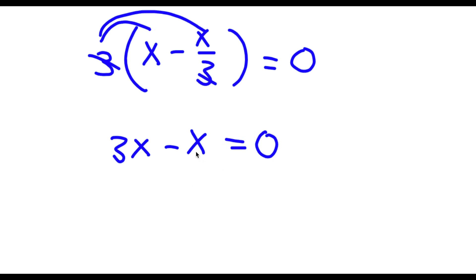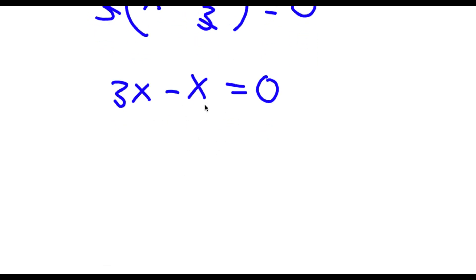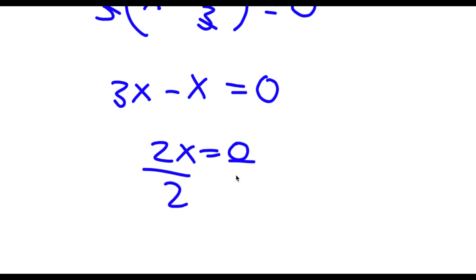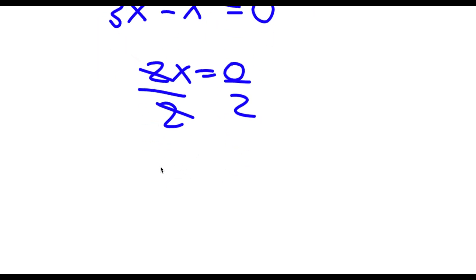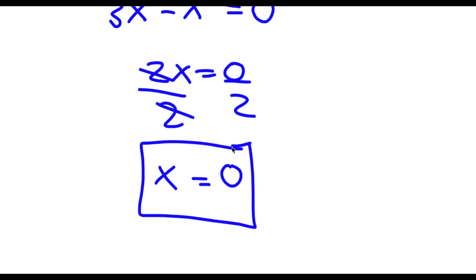Now 3x minus x is simply equal to 2x. So now I have 2x equals 0. This is pretty simple to solve — all I need to do is divide both sides by 2. These two cancel out and now I'm left with x is equal to 0 divided by 2, which is simply 0. So this is my answer.